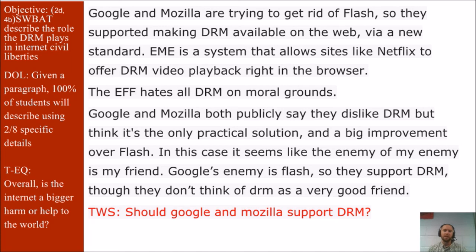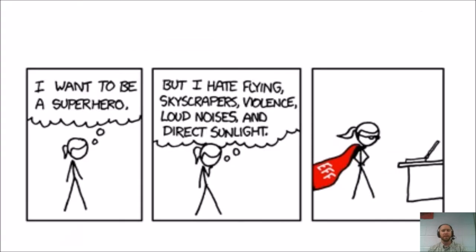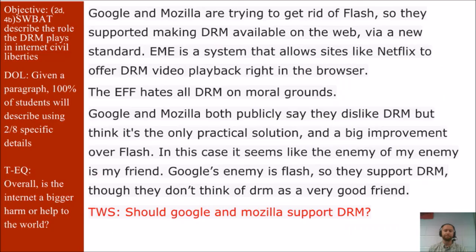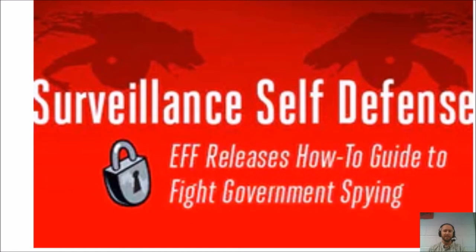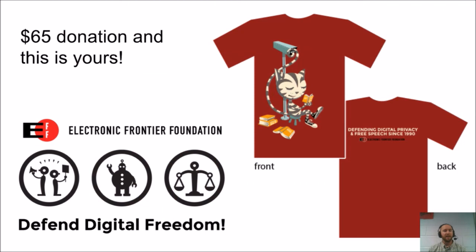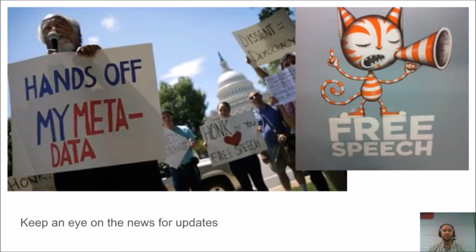The EFF hates all DRM on moral grounds. Google and Mozilla have publicly said they dislike DRM, but think it's the only practical solution and a big improvement over Flash, so they're accepting it. In this case, it seems like the enemy of my enemy is my friend — Google's enemy is Flash, so they support DRM, though they don't think of DRM as a very good friend. Think-write-share: should Google and Mozilla support DRM? Here's a little comic: 'I want to be a superhero, but I hate flying, skyscrapers, violence, loud noises, and direct sunlight.' The way to be a superhero for your common techie would be to join the EFF. The EFF also releases how-to guides to fight government spying, and what they stand for is Defending Digital Freedom. Keep an eye on the news for updates — there's quite a bit of EFF-related news lately.